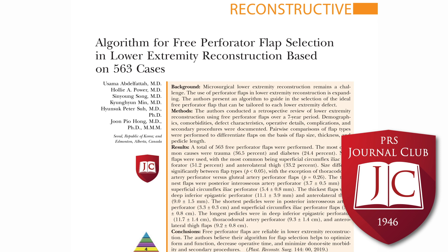The goal of this paper was to create an algorithm to select free perforator flaps that could be tailored specifically to lower extremity wounds based on the defect and other patient characteristics. The authors found 563 perforator flaps completed over the seven-year period. A majority were a combination of SCIP flaps or ALT flaps — superficial circumflex iliac artery perforator flaps and anterolateral thigh perforator flaps — but they also did a variety of different flaps including DEEPs, TDAPs, GAP flaps, free fibular and chimeric flaps, as well as posterior interosseous artery flaps.